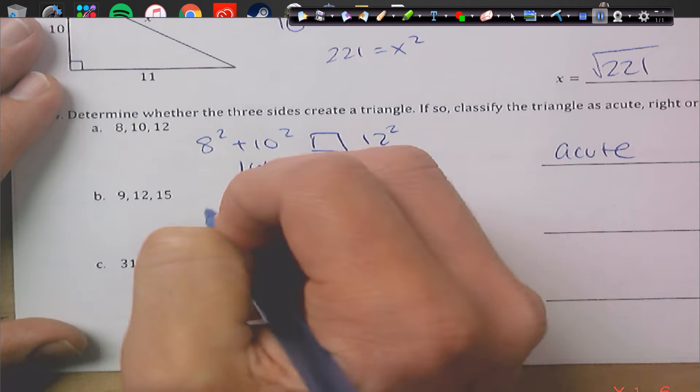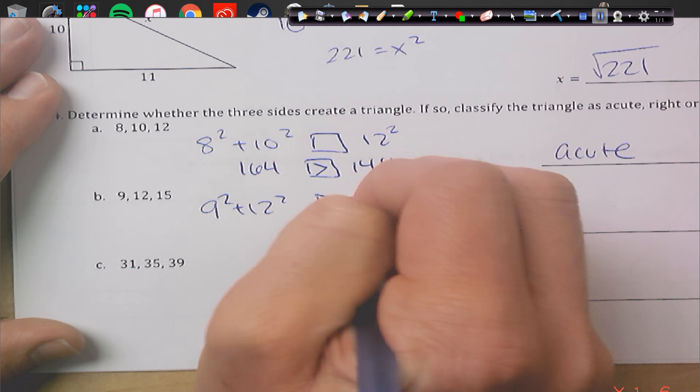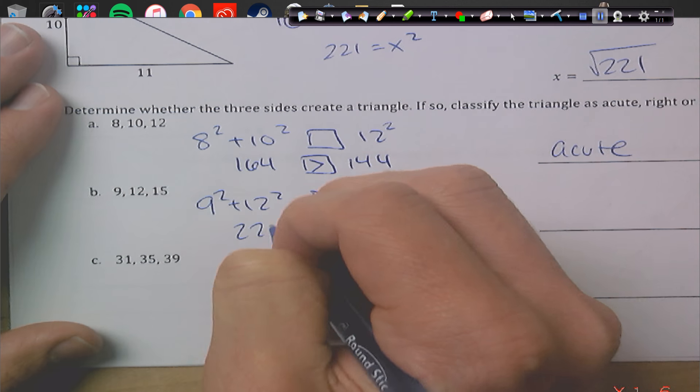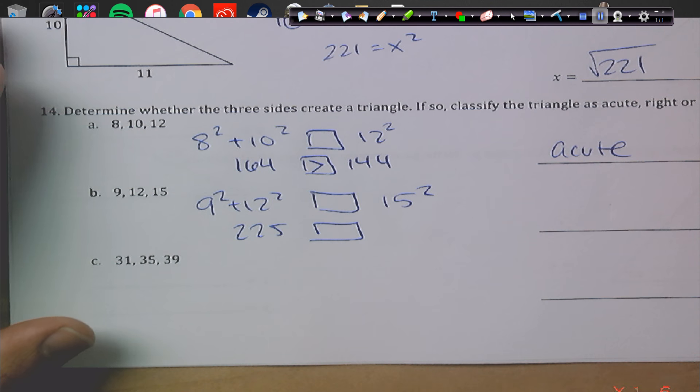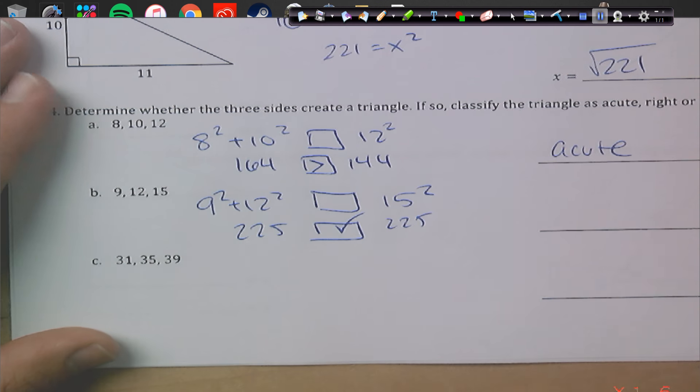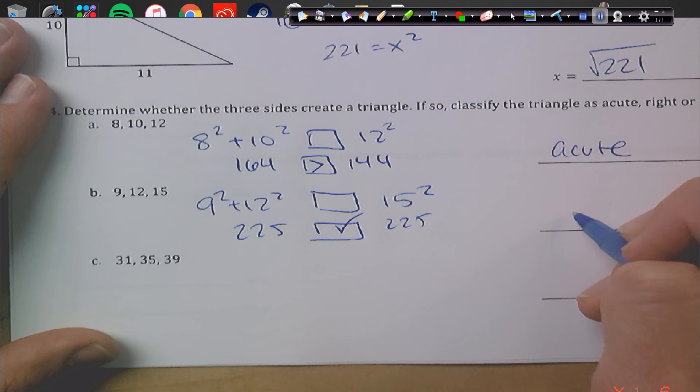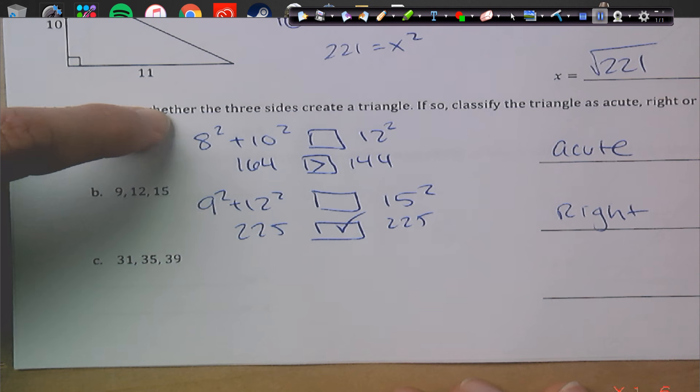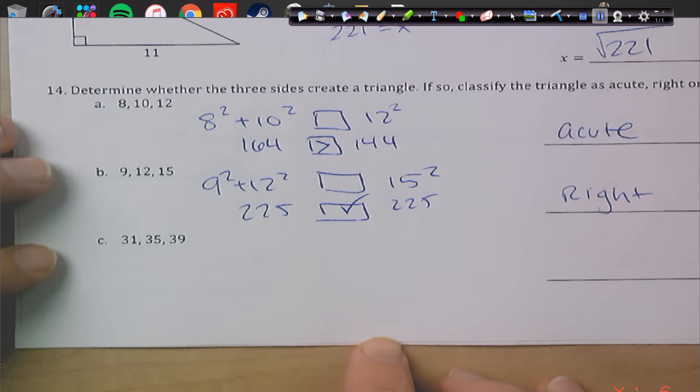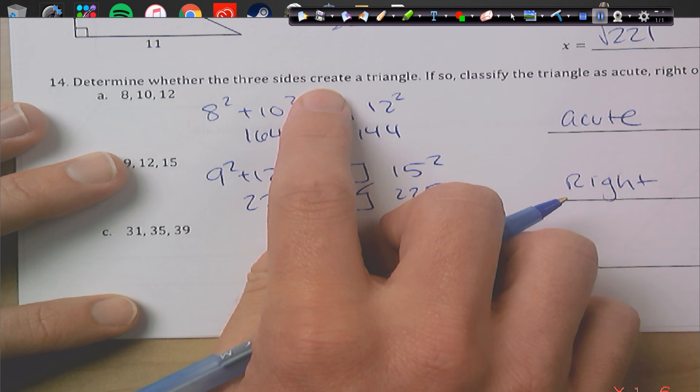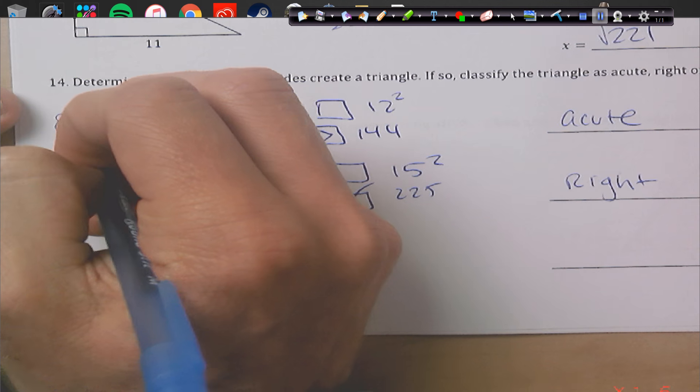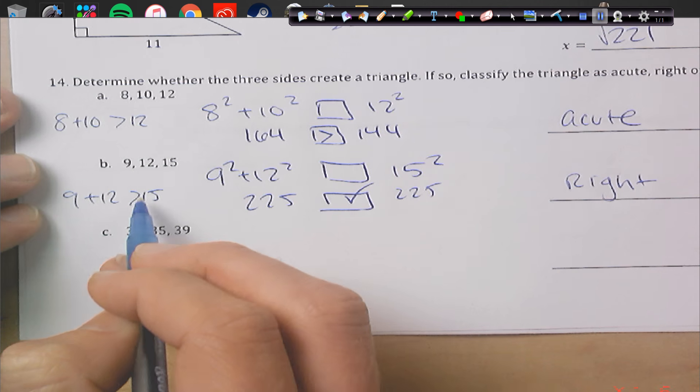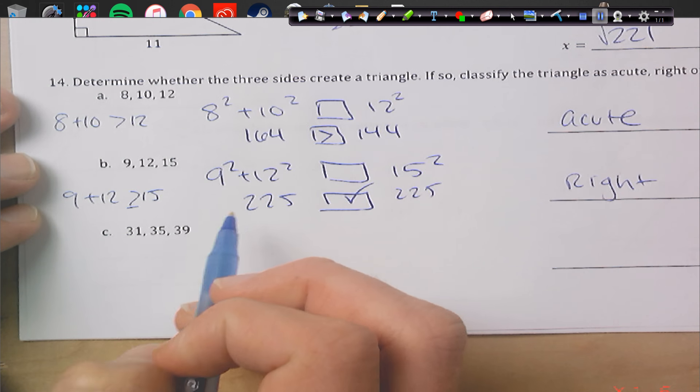All right. Let's take a look at the next one. 9 squared plus 12 squared, box 15 squared. So 9 squared plus 12 squared is 225. And 15 squared, believe it or not, is 225. And that means it is a triangle and it is a right triangle because they are congruent. We also have to check to make sure the two smaller are bigger than this one, which is true in each of these cases. So they're telling us, does it create? So we should be checking 8 plus 10 is bigger than 12, which it is. And 9 plus 12 is bigger than 15 or equal to it works as well.